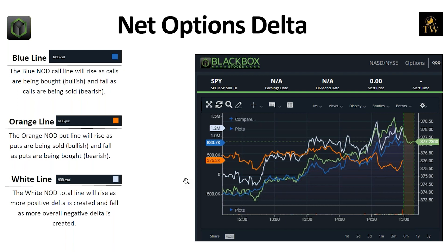The options market maker has to hedge whatever's coming in. The more calls you're having to sell as a market maker, the more of the underlying you're having to buy to remain delta neutral. So this is a great tool to tell you exactly what the market maker is having to do to hedge. A lot of people think option dollar flow and option delta are the same thing, but they're not.